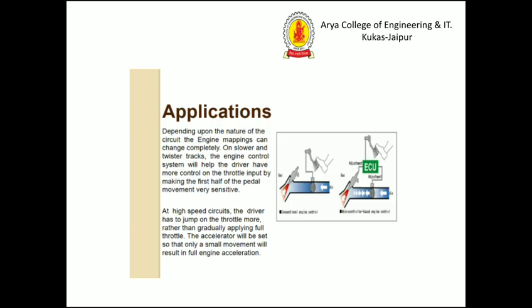Or determining how long the fuel injector is open. Depending upon the nature of the circuit, the engine mapping can change completely. On slower and twisted tracks, the engine control system will help the driver have more control on the throttle input by making the first half of the pedal movement very sensitive. These are the general applications.